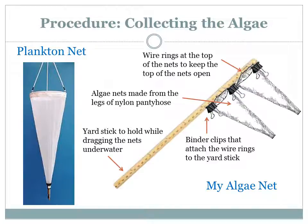On the left is a picture of a plankton net, and to the right is a diagram of my algae net. Essentially, my net is just made up of two pantyhose legs that are stretched around wire rings. The wire rings keep the nets open and are used to attach the nets to the yardstick with binder clips. Because it's on a yardstick, I can walk along a dock and drag the net underwater to collect algae.